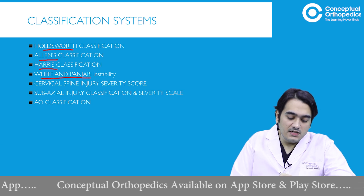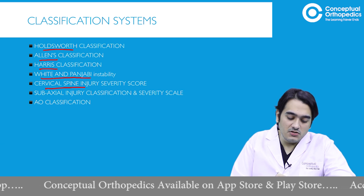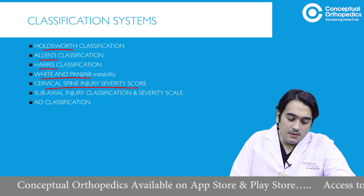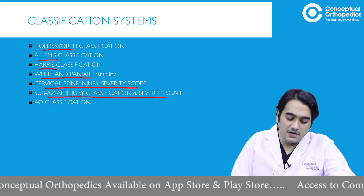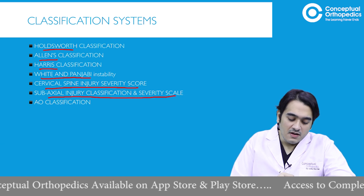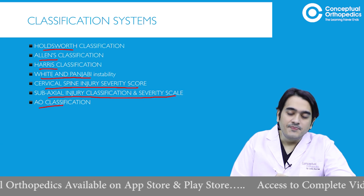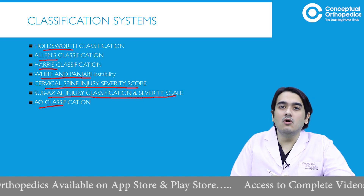Additional systems include the Cervical Spine Injury Severity Score, the Subaxial Injury Classification and Severity Scale, and the AO Classification. Let's go through all these classification systems one by one.